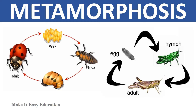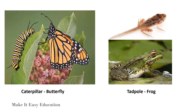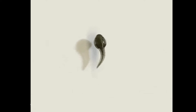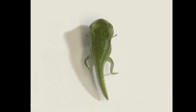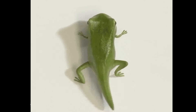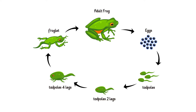Metamorphosis. In many animals the young one looks similar to the adults, but in other animals the young one looks very different. A young frog, or tadpole, has a long tail and no legs. As it grows, its tail becomes shorter and it begins to grow legs. An adult frog has no tail but has legs. The young go through a series of changes known as metamorphosis.